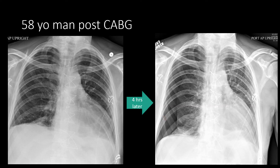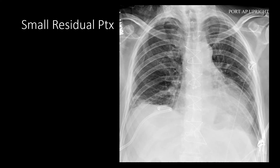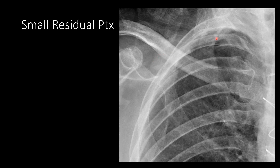In this case, a chest tube was indicated, and a pigtail catheter was placed in the lower right hemithorax. We see a small residual pneumothorax in the right apex, but that is something that we can manage conservatively. Zooming in just to show that subtle small pneumothorax in that right apex.